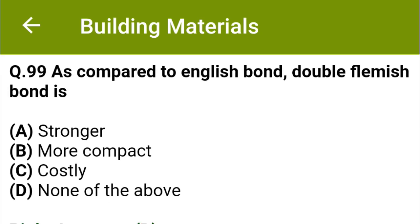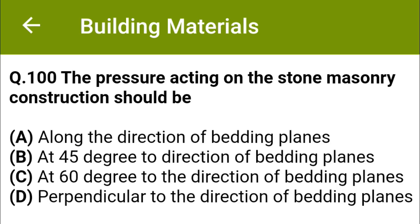As compared to English bond, double Flemish bond is: option A, stronger; option B, more compact; option C, costly; option D, none of the above. The correct answer is option D, none of the above.